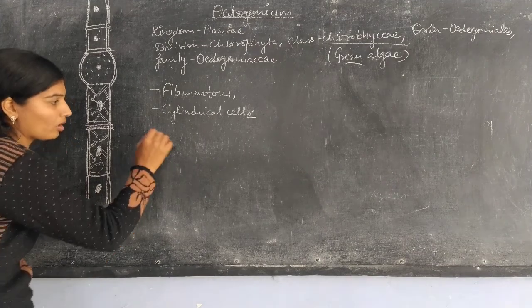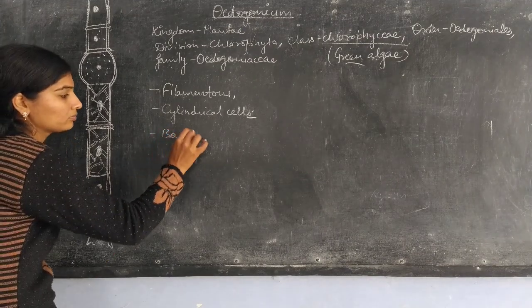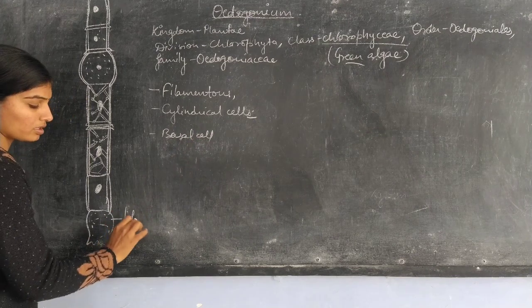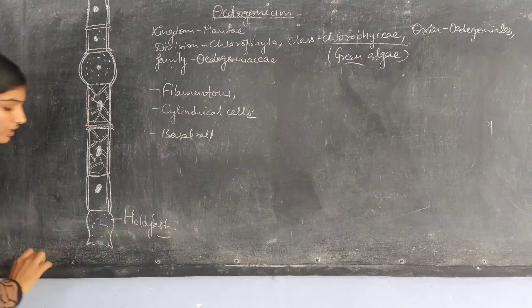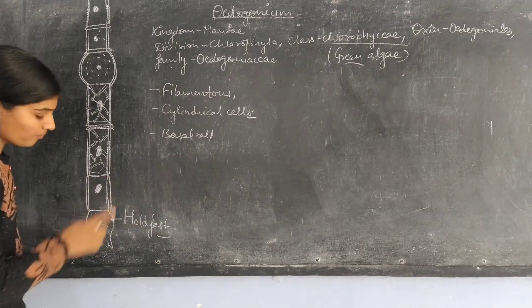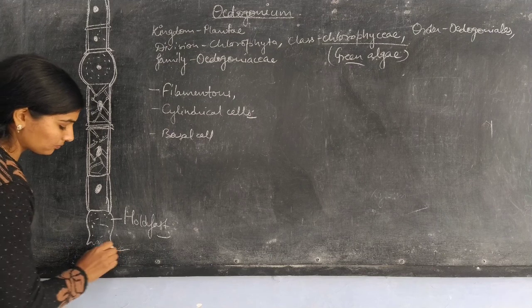The basal cell is called the holdfast. This holdfast attaches the algae to the substratum.